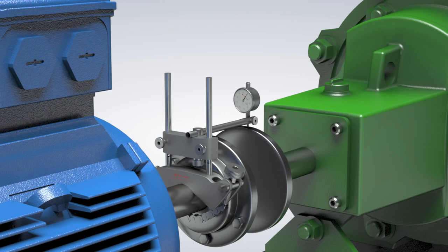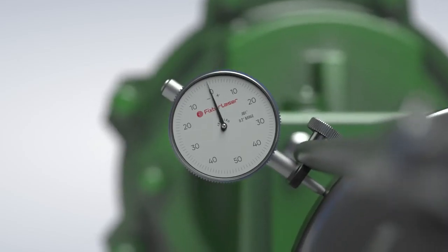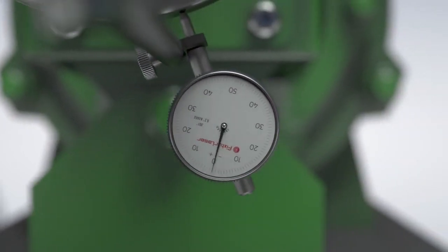For our first illustration, we'll start with the shafts perfectly aligned. As we rotate the shafts, we can see that the dial indicator stays on zero for the full revolution.